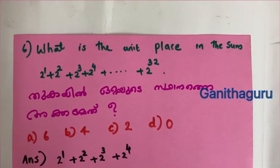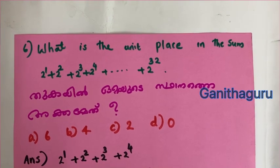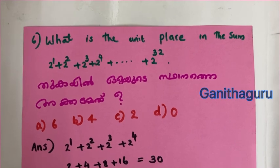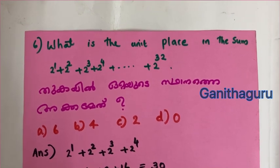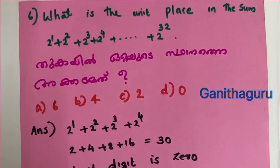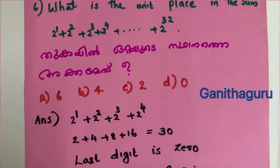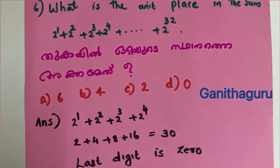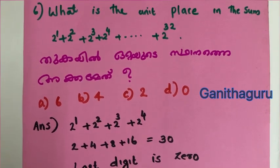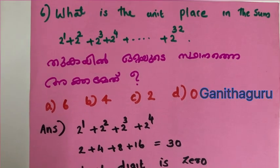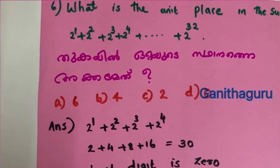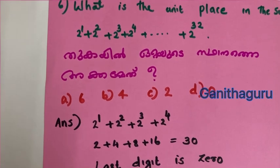What is the unit place in the sum 2 raised to 1 plus 2 raised to 2 plus 2 raised to 3 plus 2 raised to 4 plus ... plus 2 raised to 32? Consider 2^1 + 2^2 + 2^3 + 2^4 equals 2 + 4 + 8 + 16 equals 30. The last digit of the sum of each group of 4 is 0.